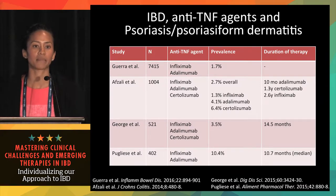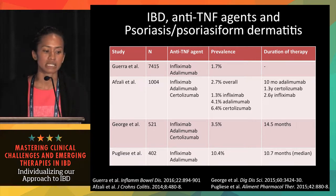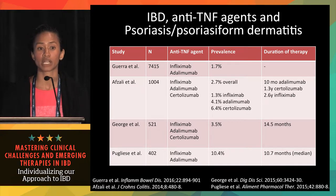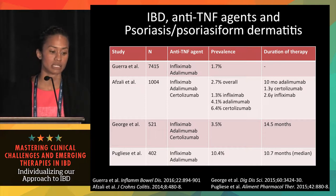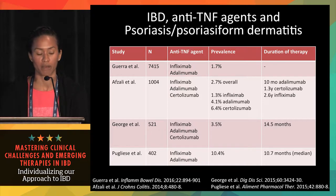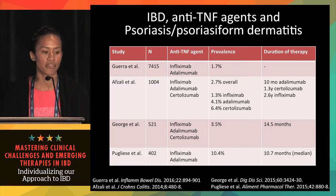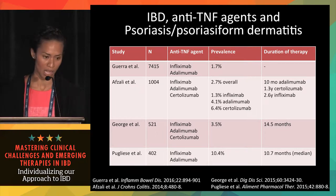How common is psoriasiform dermatitis in IBD patients on anti-TNF therapy? I've included the four largest cohort studies looking specifically at this issue. Prevalence ranges from 1.7% to 10%. The study by Pugliese et al. looks like an outlier with a higher prevalence rate, but two other large studies — including one out of France — also showed a prevalence around 10%, so that does seem accurate.